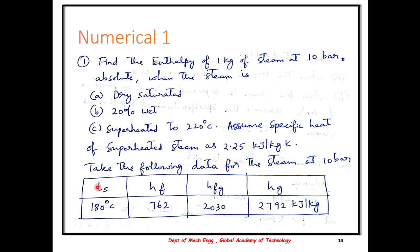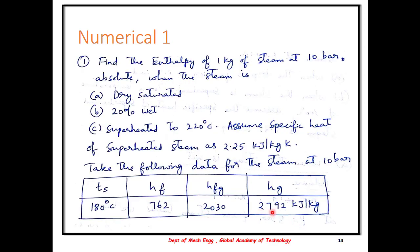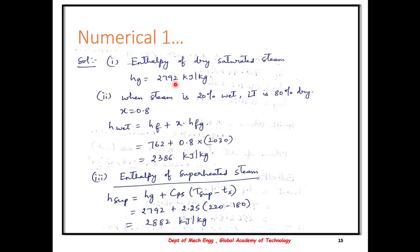Fortunately, in the numerical itself the table lists the enthalpy properties, so we need not look at the steam tables separately, and the specific heat is also given. Remember, if it is not given, the value is assumed as 2.25 kJ per kg Kelvin. The enthalpy of dry saturated steam can be directly read from the steam tables as 2792 kJ per kg. As stated, HG from the steam tables is for dry saturated steam where X equals 1, so 2030 plus 762 equals 2792.